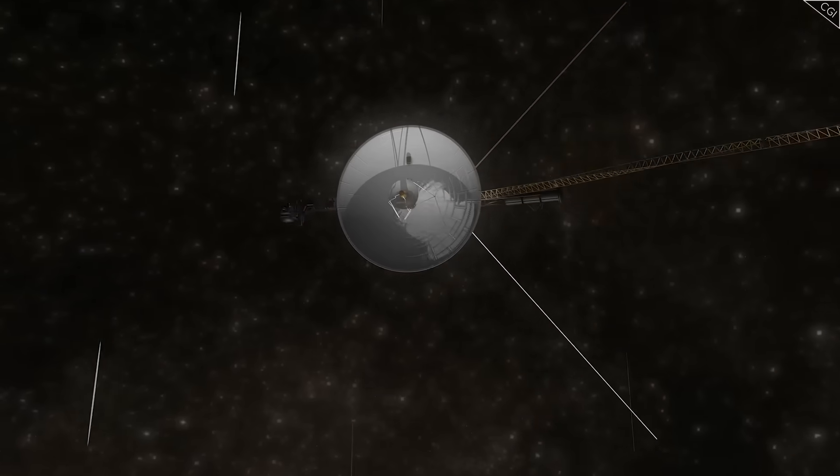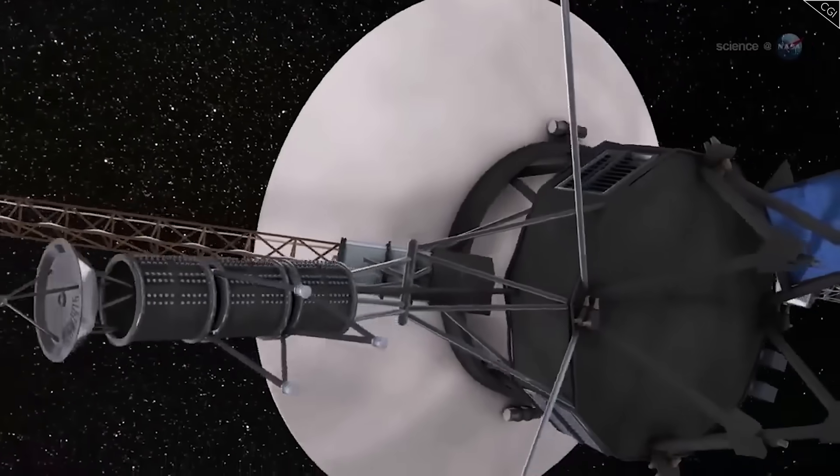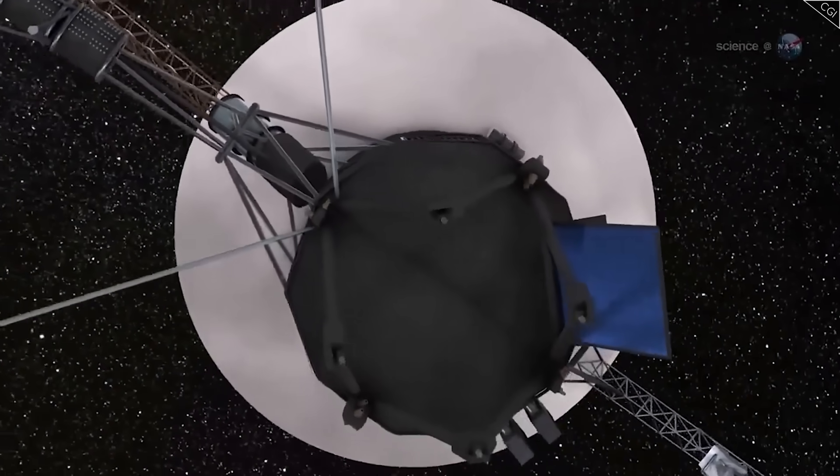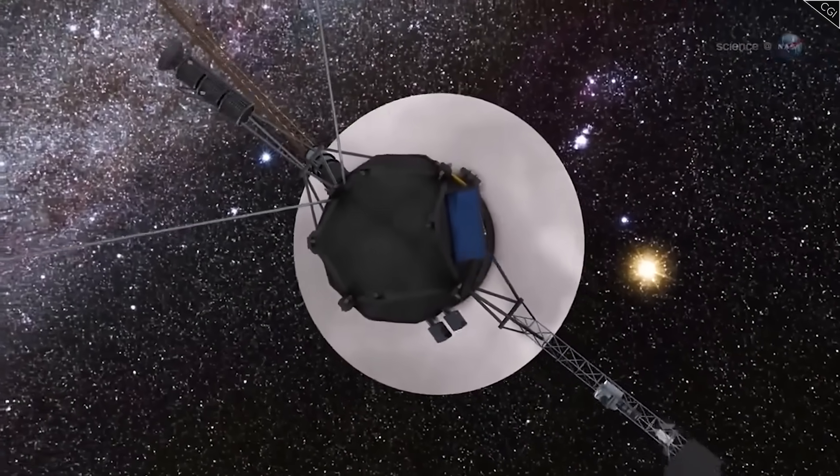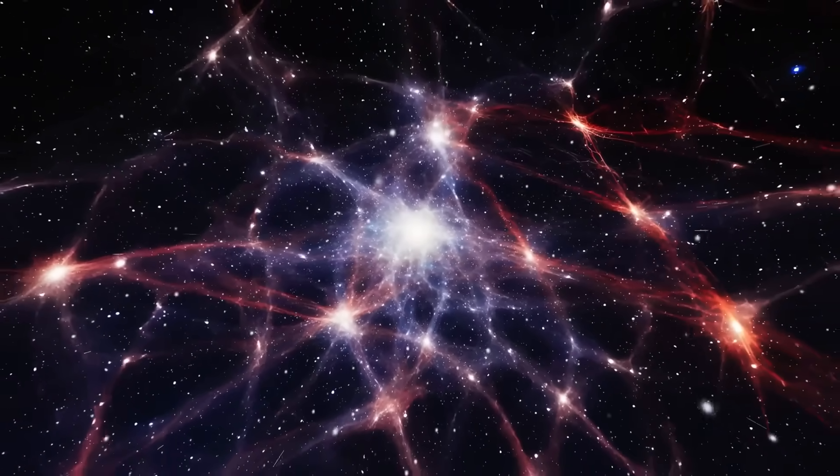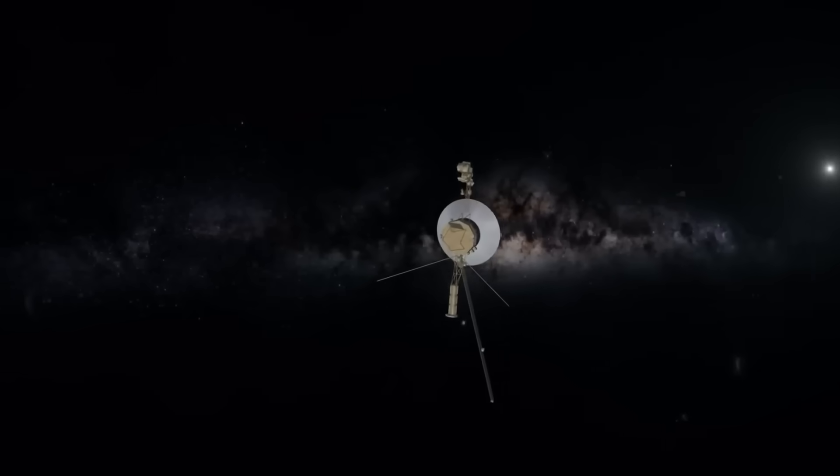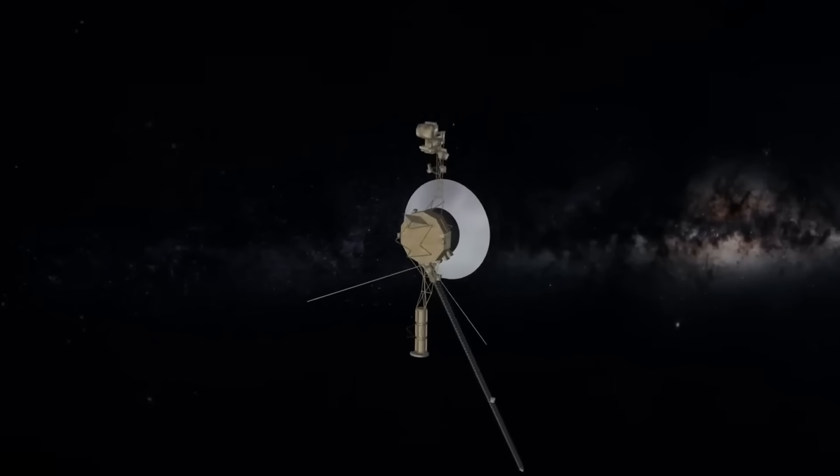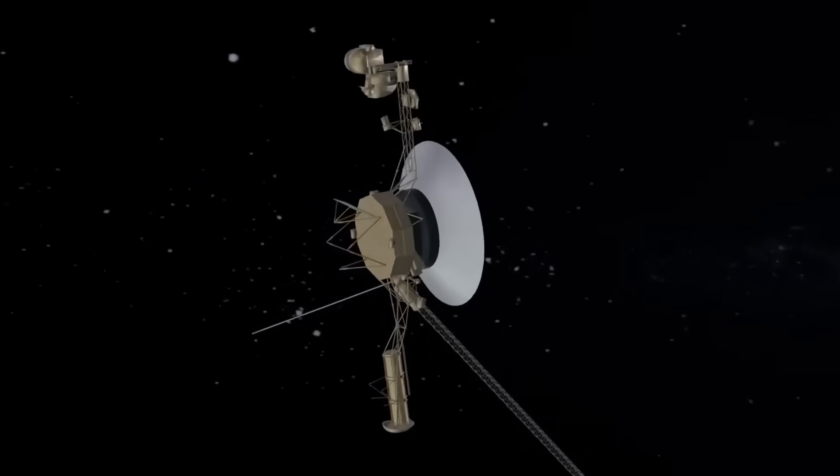Voyager 1, though no longer equipped with propulsion, still carries gyroscopes and antenna alignment systems that allow engineers to slightly adjust its orientation. But on August 1, 2025, multiple amateur space tracking communities reported an unexpected shift in Voyager 1's telemetry data.